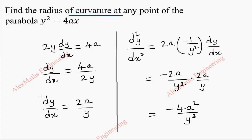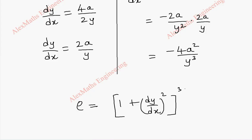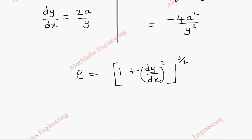Now, coming to the formula of the radius of curvature: rho equal to 1 plus dy by dx whole square, whole power 3 by 2, divided by d²y by dx square. In case this is negative, we have to take a modulus.